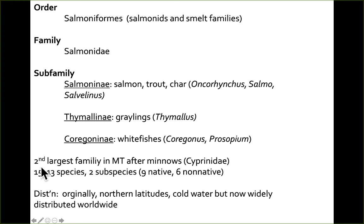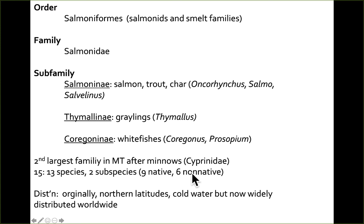The Salmoniformes are the second largest family in Montana after the minnows, also known as Cyprinidae or Leuciscidae. There are 13 species and 2 subspecies — 9 of these are native and 6 are non-native. Their distribution was originally in northern latitudes in cold water, but now they're distributed worldwide.